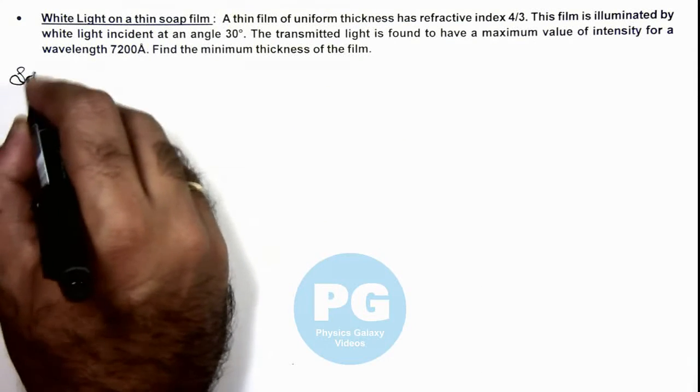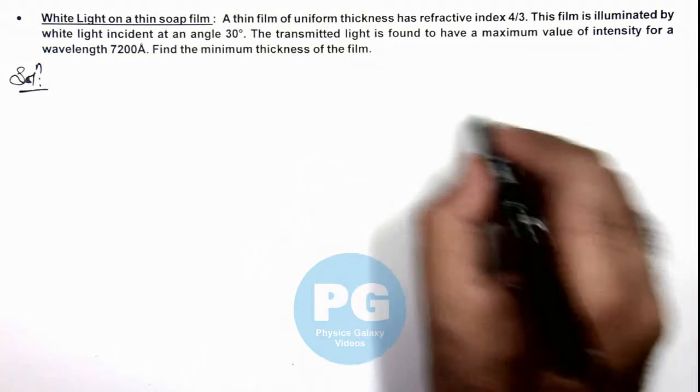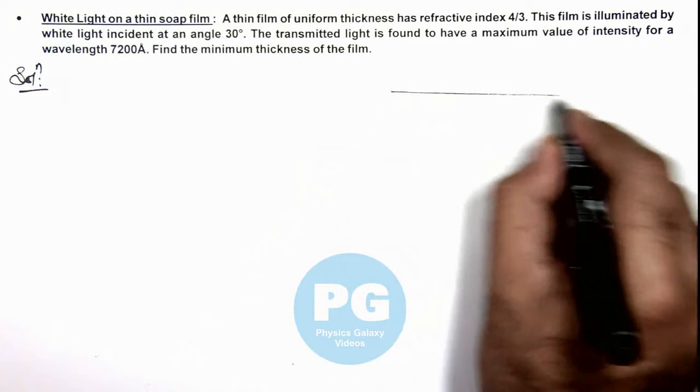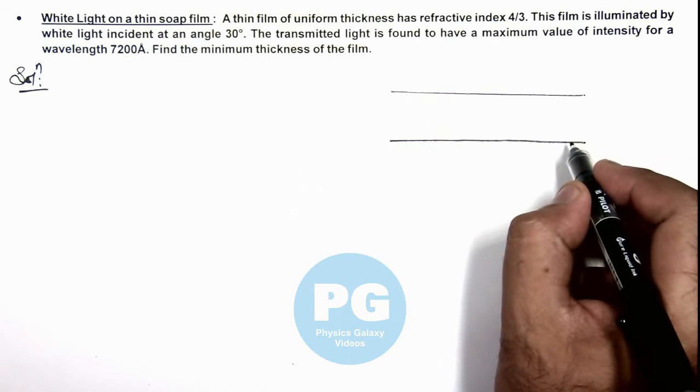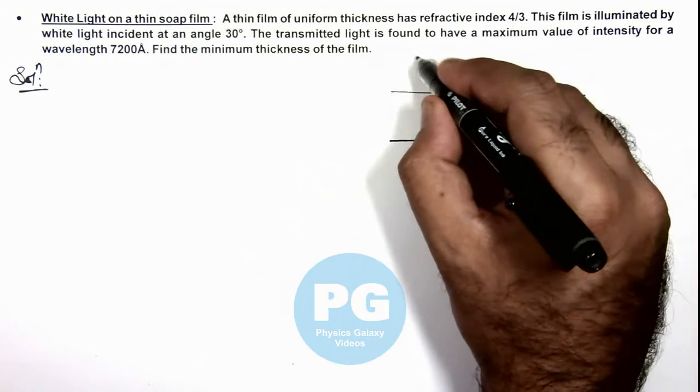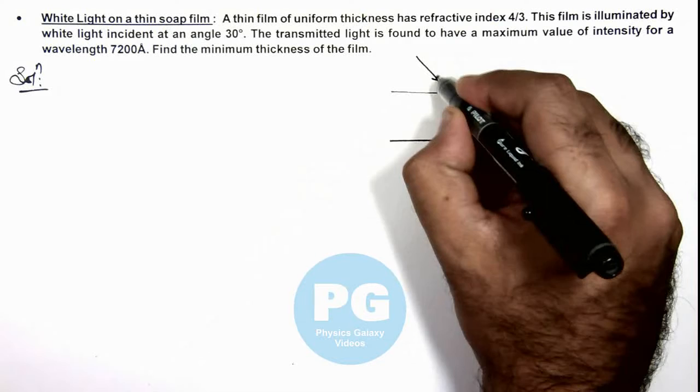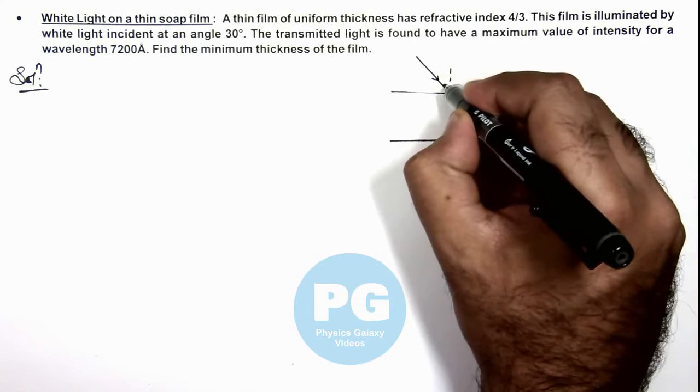So first, here we need to analyze the path difference of the light beams which will be transmitted through a thin film when the incident light is falling onto it at an angle of incidence 30 degrees.